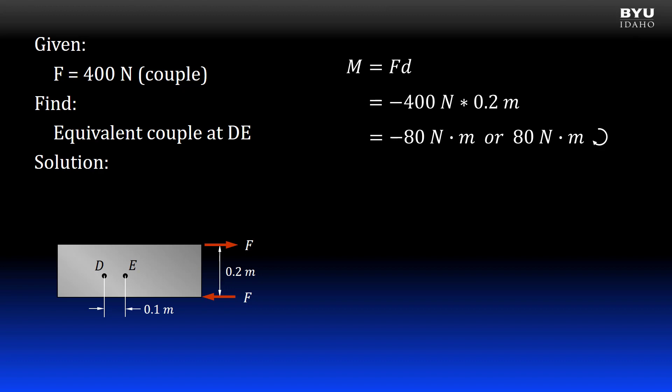Now, I want to find an equivalent couple at points D and E. To be equivalent, it will have the same moment magnitude and direction. I can imagine the couple will look something like this. Since the perpendicular separation is only 0.1 meters, I will need to compensate with larger forces, F2.